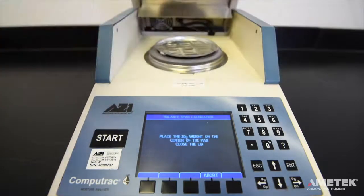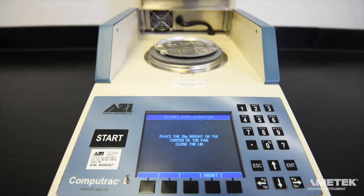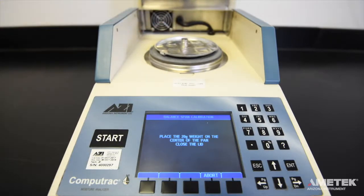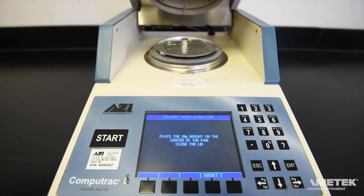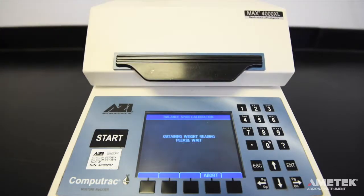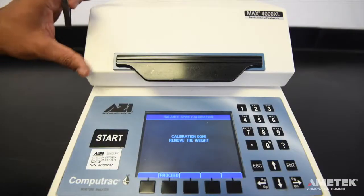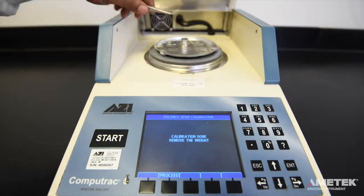Repeat the addition and removal of the 20 gram weight as directed by the instrument. The first round was to calibrate the balance. The second was to verify that the calibration was successful and that the balance is working properly. Throughout the process, it is important to avoid putting excess pressure on the balance. Continue to follow the on-screen instructions until the span calibration has been completed.